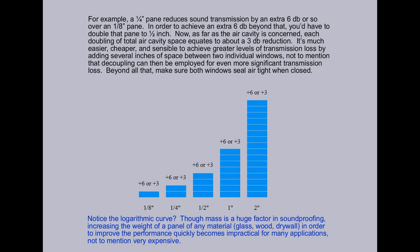For example, a quarter inch pane reduces sound transmission by an extra six decibels or so over an eighth inch pane. In order to achieve an extra six decibels beyond that, you would have to double that pane to a half inch.